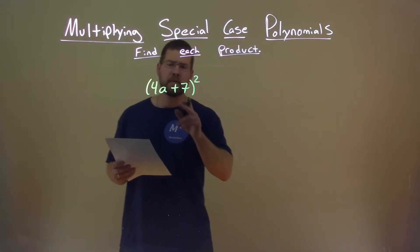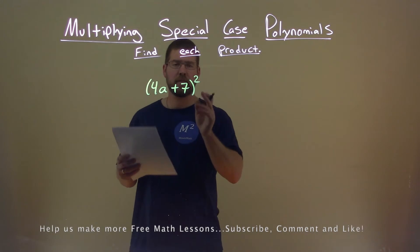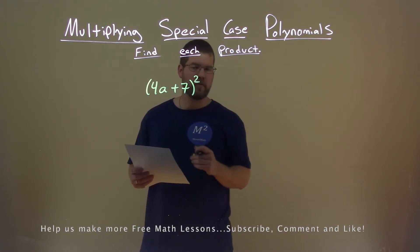We're given this problem here: 4a plus 7, in parentheses, all squared, and we need to find this product.